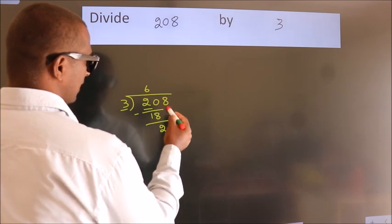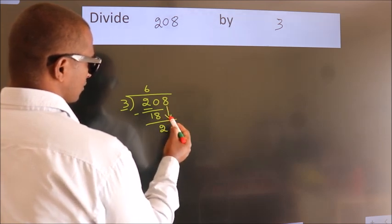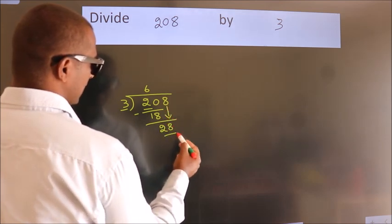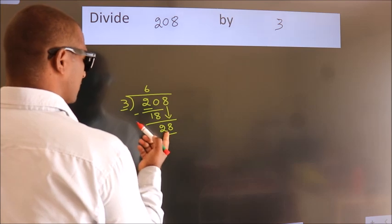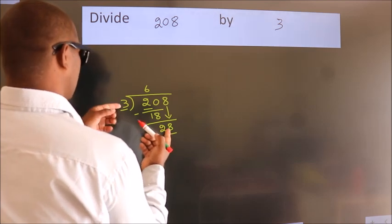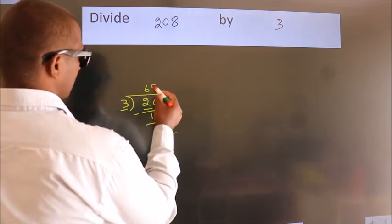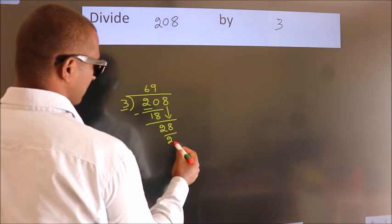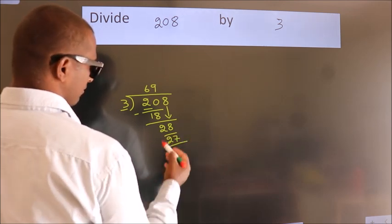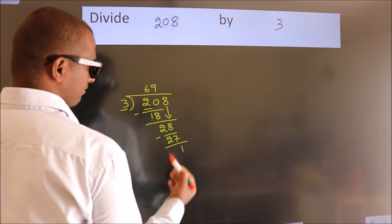After this, bring down the beside number. So 8 down, so 28. A number close to 28 in the 3 table is 3×9=27. Now we subtract. We get 1.